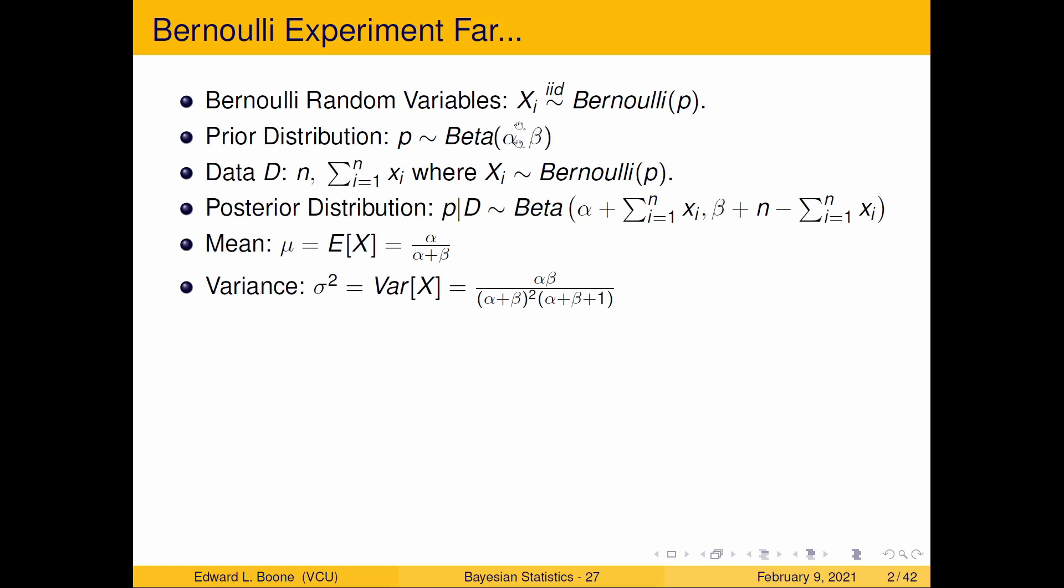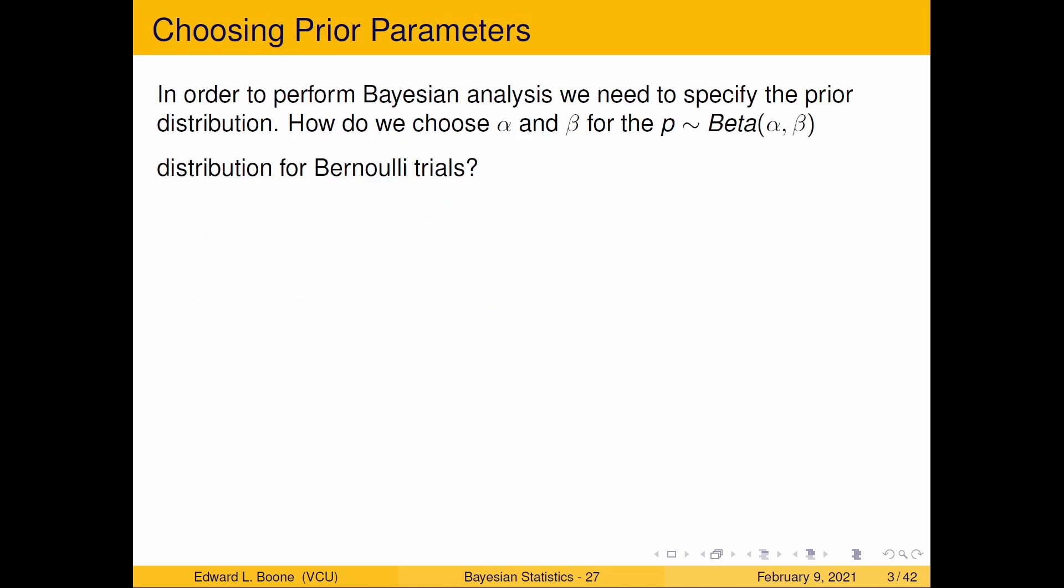The question is, how do I choose those alpha and beta for my prior distribution? And I'll give you a couple examples here. So we could choose uniform. Uniform means every point is equally likely. We could look at the number of successes and failures approach, and we could look at the method of moments approach. There's lots of approaches, but I'm trying to keep this down to something reasonable.